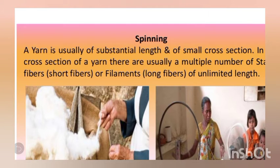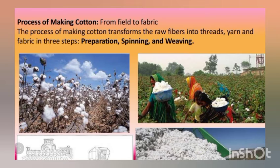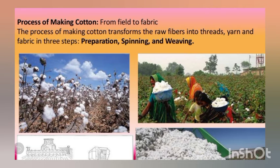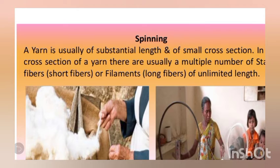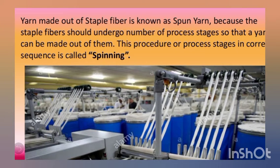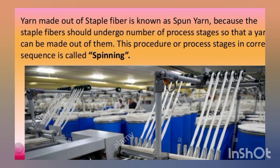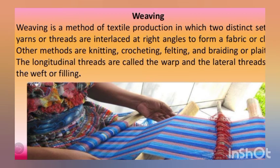Ginning is the process of separation of the cotton fiber from the seeds, and it is now done by machines. After ginning, the next process is spinning, in which the fibers are spun together in a long continuous form to make yarn. Spinning can be done by the charkha or it can also be done in industries.